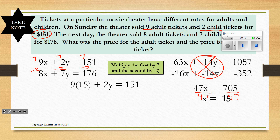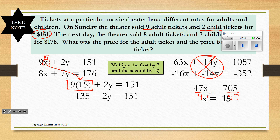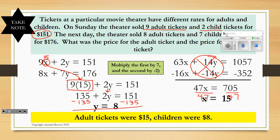Now we plug X equals 15 back into the first equation. Using order of operations, 9 times 15 is 135. We subtract 135 from both sides, then divide by 2, and get 8. So the adult ticket price was $15 and the child ticket price was $8.